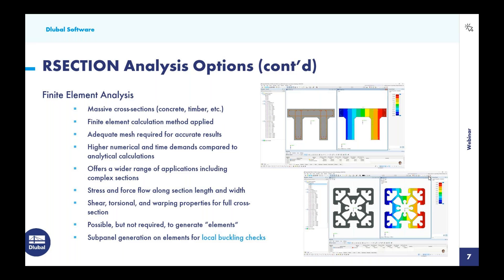The finite element analysis offers a wider range of applications, including for complex sections. For example, an aluminum extrusion that gets complex in shape — we would want to apply the finite element analysis. The stress and force flow is considered along the entire cross-section length and width. The shear, torsional, and warping properties reference the part rather than elements from the full cross-section. It is still possible to generate elements with a finite element analysis method — it's just not required. So if we want to carry out local buckling checks while running a finite element analysis, we can generate elements and bring them into RFEM to still get those local buckling checks.